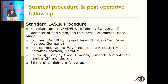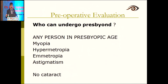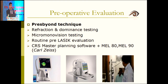Standard protocol follow-up: day one, first week, one month, three months, six months, twelve months, and twenty-four months — I have three-year follow-up data. Candidates: anyone with presbyopia, provided there are no cataractous changes. Myopia up to 8 D depending on PACH value, hypermetropia up to 4.5 D, emmetropia, astigmatism up to 2.5–3 D. Regarding technique: cycloplegic refraction is very important for all patients, whether myopic or hypermetropic.